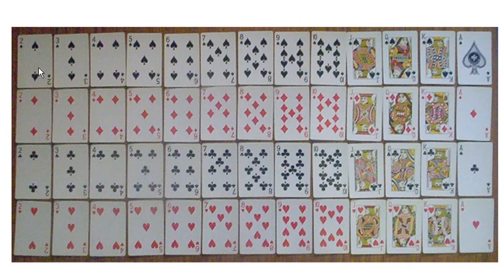There are the numbers 2 through 10, an ace which sort of corresponds with a 1, and then these three are called face cards: the jack, the queen, and the king.